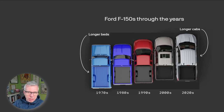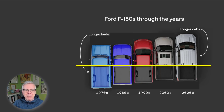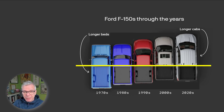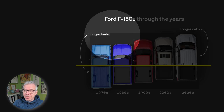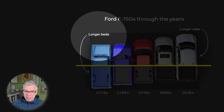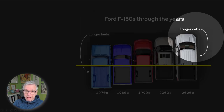Why is this chart genius? It's all about the baseline. They chose the baseline to be the back of the cab, thus enabling us to see very clearly that the beds got shorter and cabs got longer.